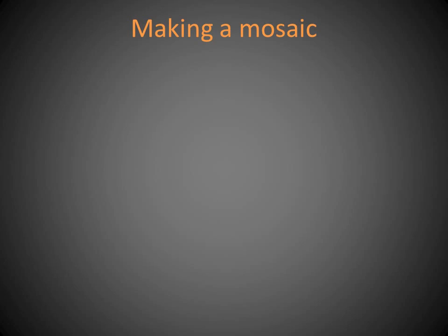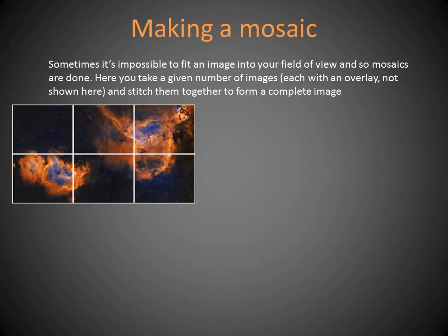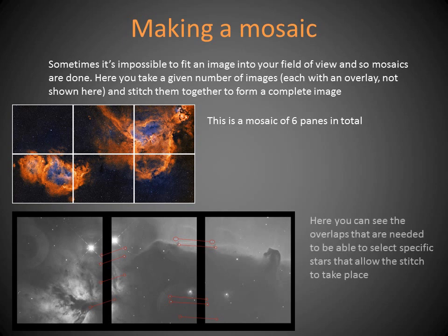If your target doesn't fit into your frame, you need to consider making a mosaic. Here is an example — a mosaic of three frames across and two frames down, so six panes total. You take the six panes and stitch them together. Anyone who has done panoramic photography will have come across stitching. Here's another example, a three-pane mosaic, showing how you stitch things together — you need an overlap so the software can register matching stars between adjacent frames and join them seamlessly.